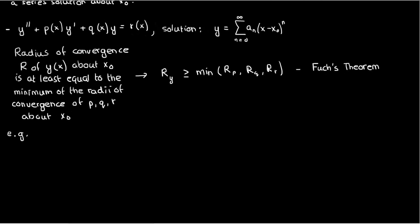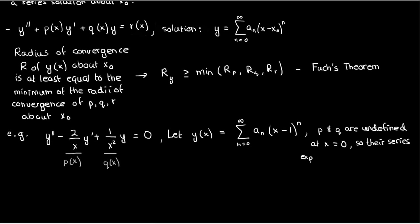If for example my ODE was y'' - 2/x y' + 1/x² y = 0, then since p is undefined at 0 and so is q, I could have my solution be a series centered around x₀ = 1. In that case when solving my ODE, the radii of convergence of p and q are both 1. Why? Well it's because the nearest singular or undefined point is at x = 0, so the radius of convergence becomes limited by the distance between the point I'm expanding around, which is x = 1, and the nearest singular point, which is x = 0. So because of Fuchs' theorem, my solution y(x) will at least have a radius of convergence of 1 if it's taken as a series expansion about x₀ = 1.